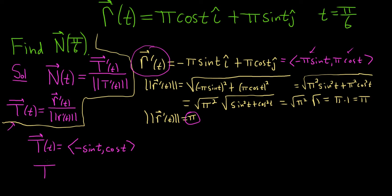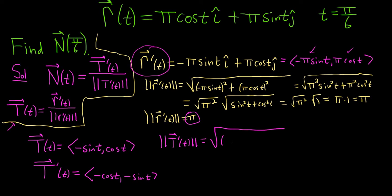Now we need the derivative of the unit tangent vector T prime of t. The derivative of negative sine is negative cosine(t), and the derivative of cosine is negative sine(t). The magnitude of T prime is the square root of negative cosine(t) squared plus negative sine(t) squared, which is just cosine squared plus sine squared, equal to 1.